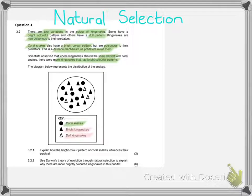The diagram below represents the distribution of the snakes, and so we have our coral snakes represented by our circles, and then our bright and our dull kingsnakes in our triangles. Now, it's important to unpack a really important concept here that they're trying to get across to you.